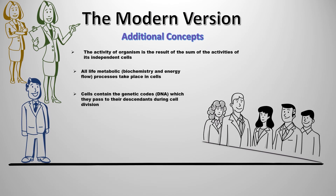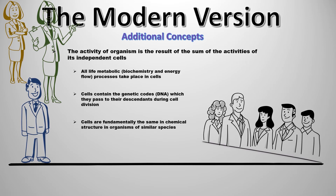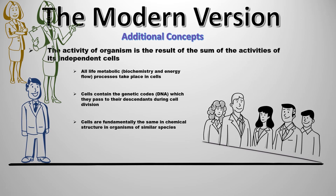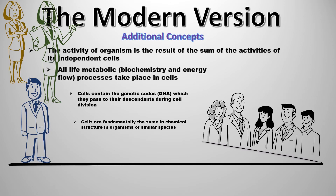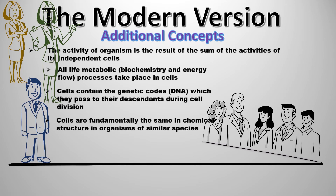As a result, four additional statements were added to explain the molecular level of the cell, which explains the relationship between the activity of the organism and its cells. The first states that the activity of the organism is the result of the sum of the activities of its independent cells. The second states that all life metabolic processes take place in cells — meaning all biochemical and energy flow processes occur inside the cell.